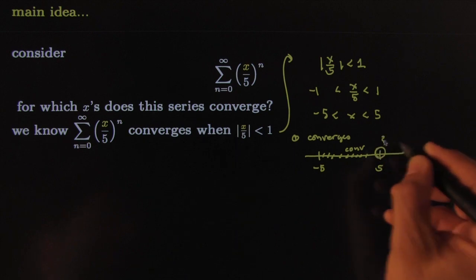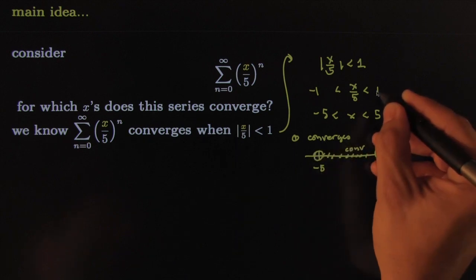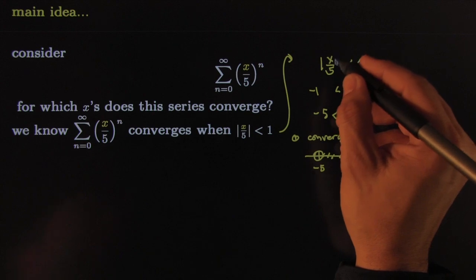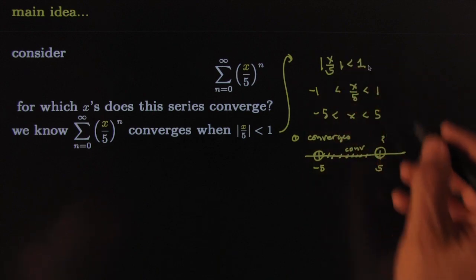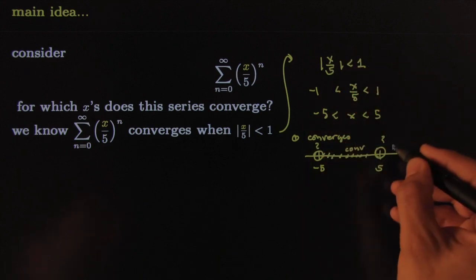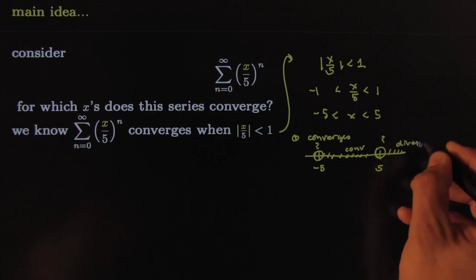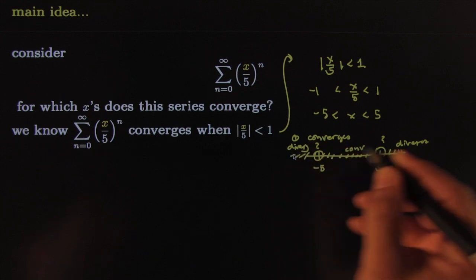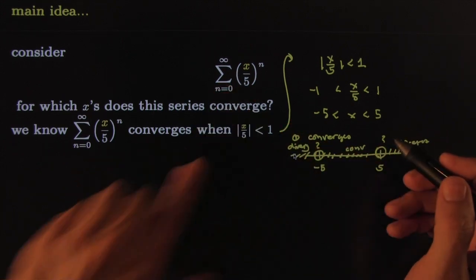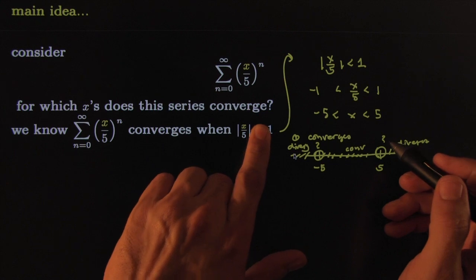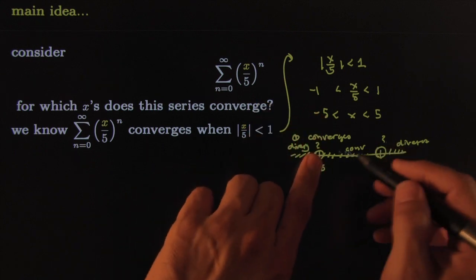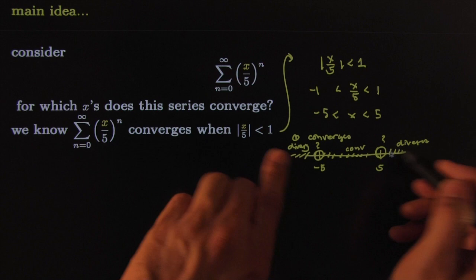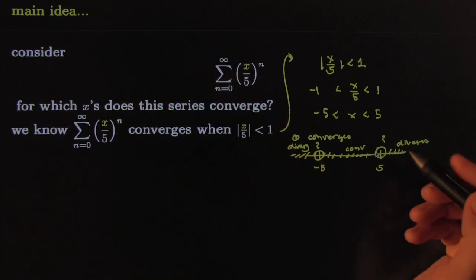The endpoints I don't know because the test is inconclusive whenever that absolute value is equal to one. So it's inconclusive here, inconclusive here, but it's conclusive here—we know here diverges and here diverges. So we're really close to answering the question: for which x's does the series converge? It converges from negative five to five in the interior, diverges outside, and the endpoints—well, we need to check these separately.